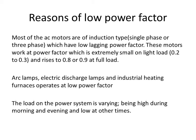Another cause is arc lamps, electric discharge lamps, and industrial heating furnaces — these also operate at low power factor. Then there is the varying load on the system. The load on the power system is varying: during morning and evening times the loads are high, whereas throughout the day the load will be small. During low load periods, the supply voltage is increased, which increases the magnetization current, and this results in decreased power factor.